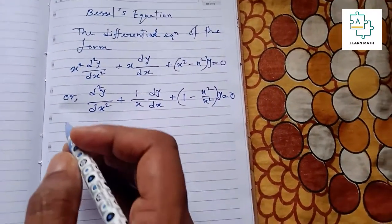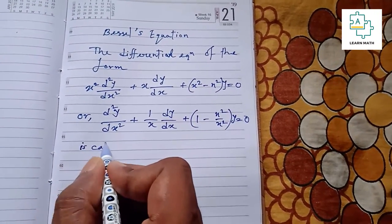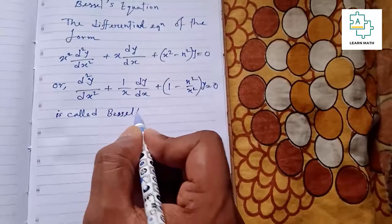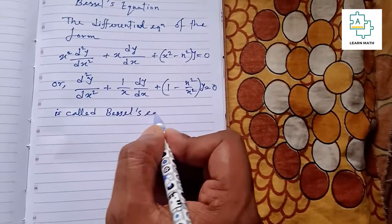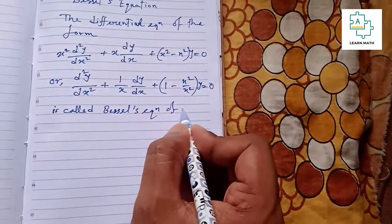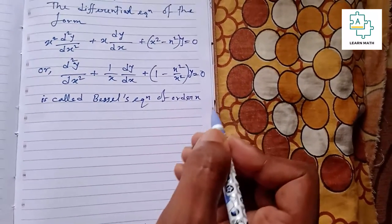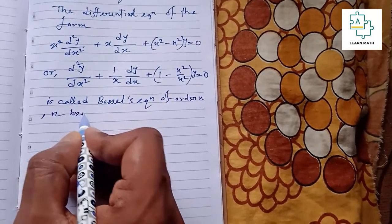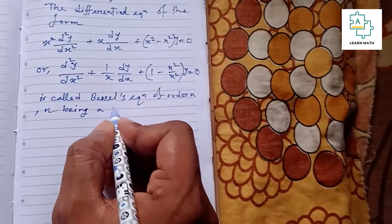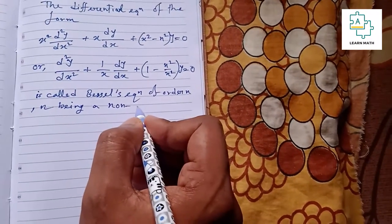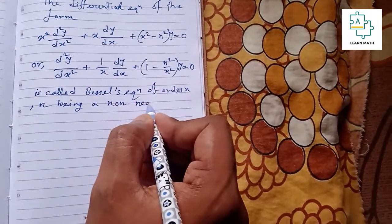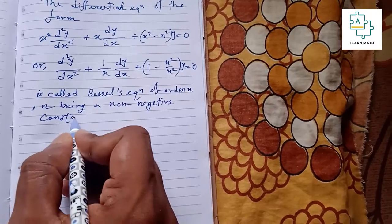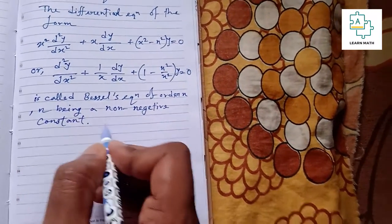This equation is called Bessel's equation of order n, n being a non-negative constant.